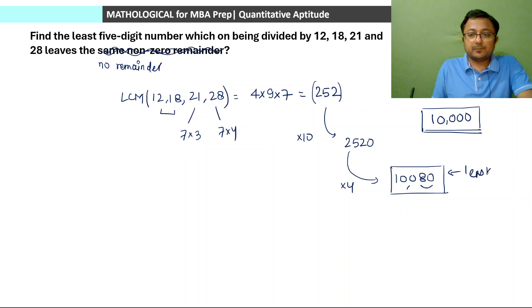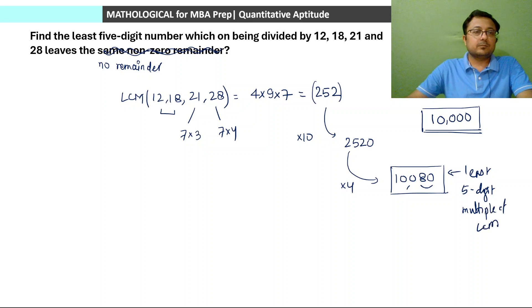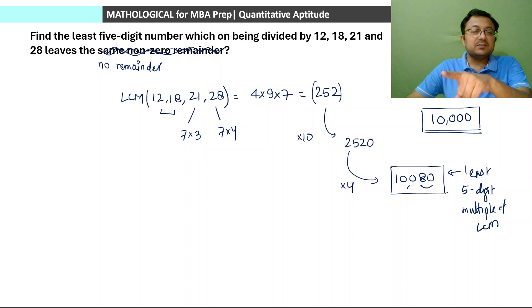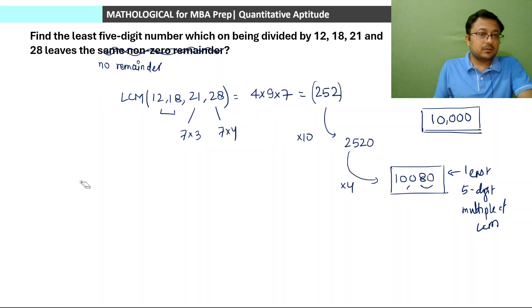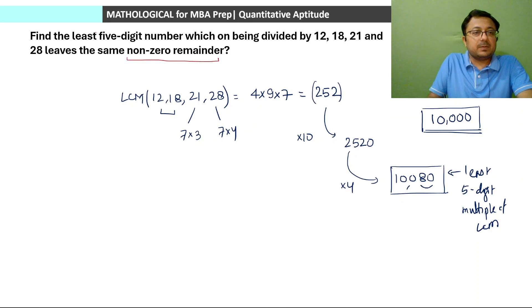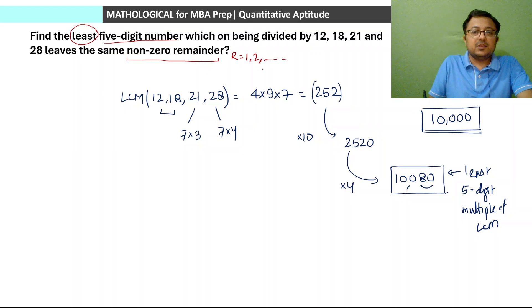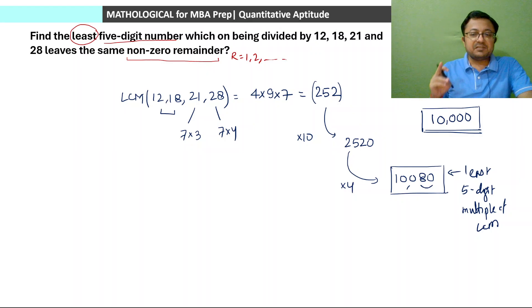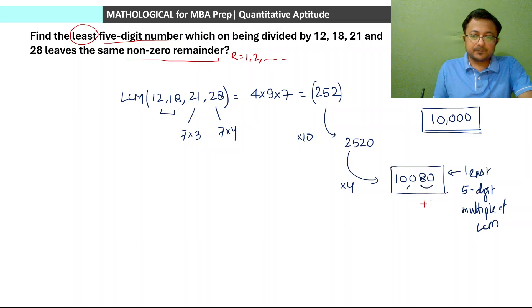So 10,080 is the least 5-digit multiple of the LCM. But our question asks for the same non-zero remainder — not zero remainder. The remainder can be 1, 2, 3, or any non-zero value. We want the smallest such number. Since 10,080 is completely divisible, we add 1 to get 10,081. So the answer is 10,081.